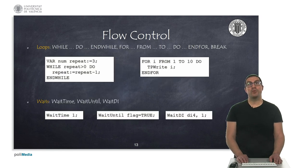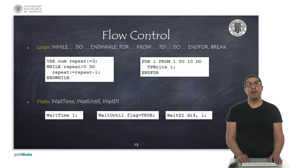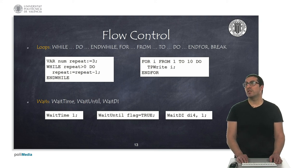Loops allow you to repeat a set of instructions for a given amount of time. For that, we can use WHILE or FOR keywords. We can break the execution of loops with the BREAK instruction. If we want to make a wait, then we can use the WaitTime function. But we can also make a conditional wait for an expression to become true or until a digital signal takes an indicated value, using the instructions indicated here.